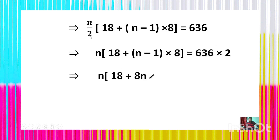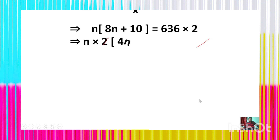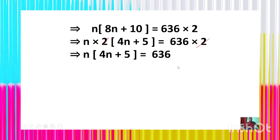The 2 in the denominator on the left-hand side transfers to the right-hand side, giving 636×2. We get n × [18 + (n−1)×8] = 636×2. Expanding: n × [8n + 18 − 8] = n × [8n + 10] = 636×2. Taking the common factor 2 out: n × 2 × (4n + 5) = 636×2. The 2s cancel on both sides, giving n(4n + 5) = 636.